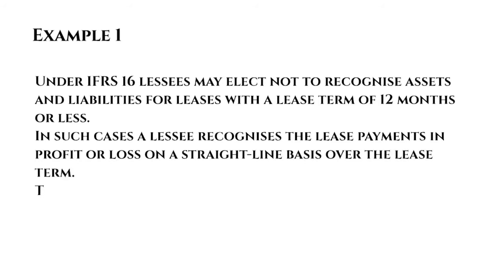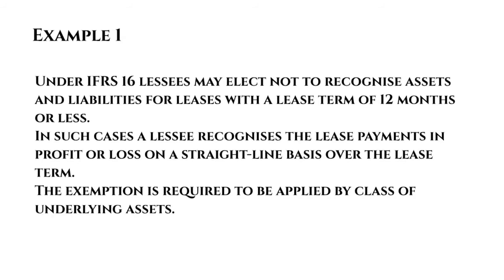So if the lease was for four years, you would take the total payments, divide by four, and that's what goes to the profit and loss account. Now the exemption is required to be applied by class of underlying assets. So if you've got machinery being leased and vehicles being leased, those are two different types of underlying assets, and you must apply that exemption to both classes.